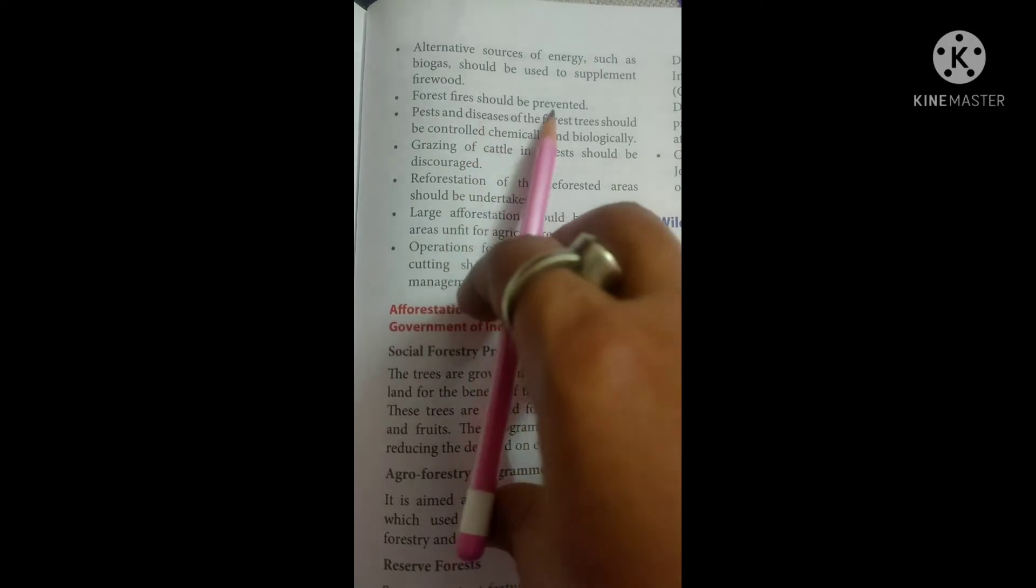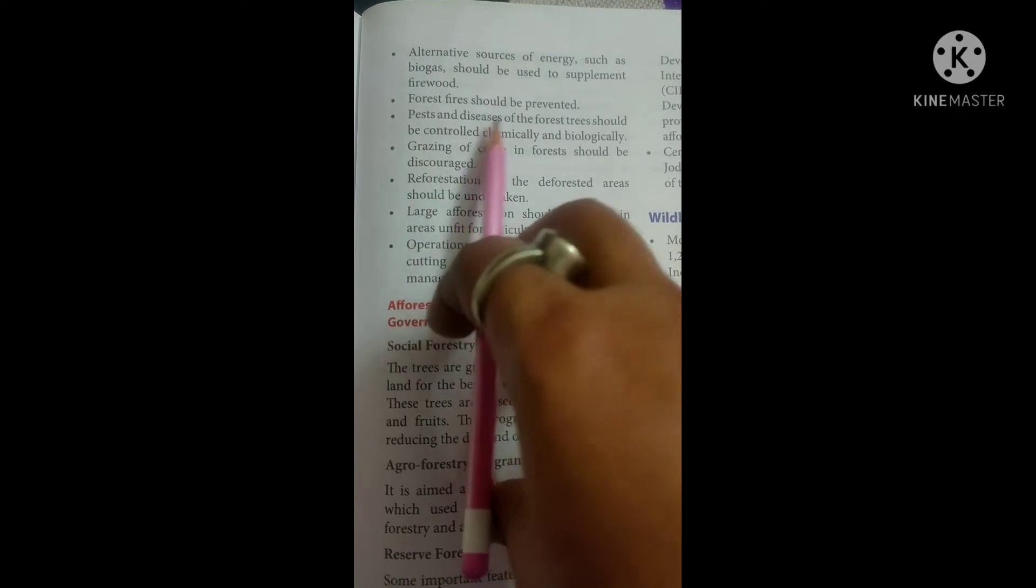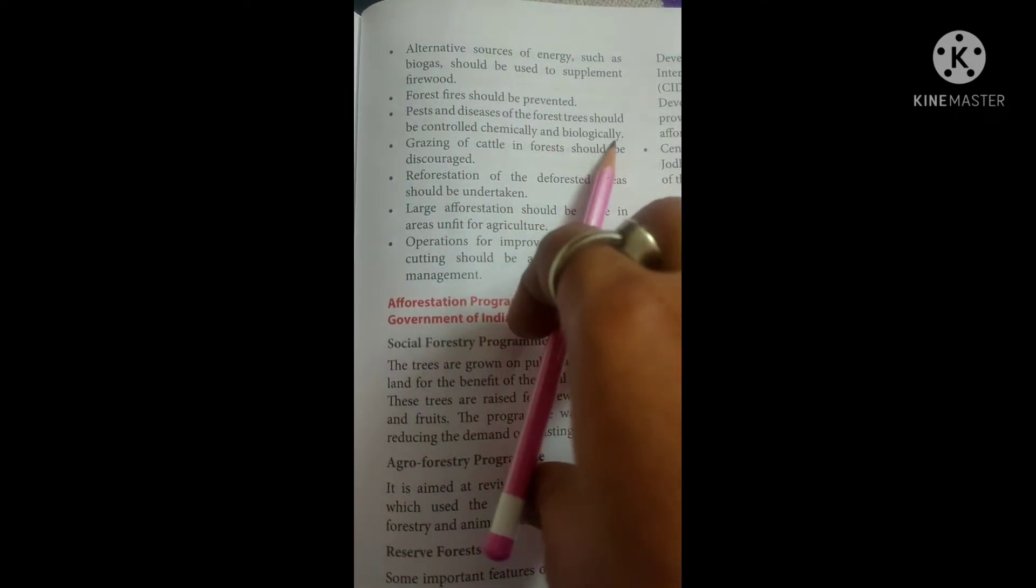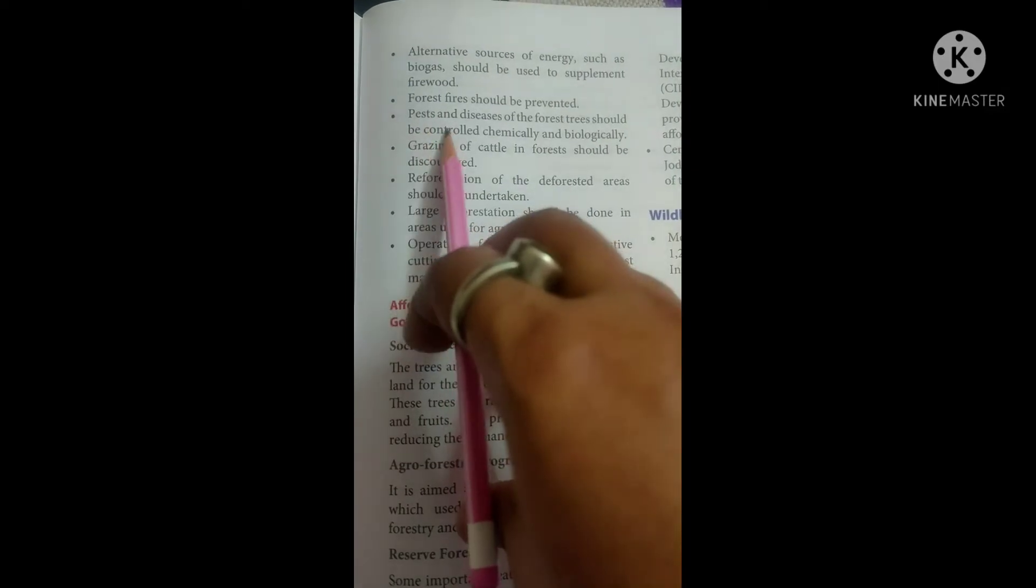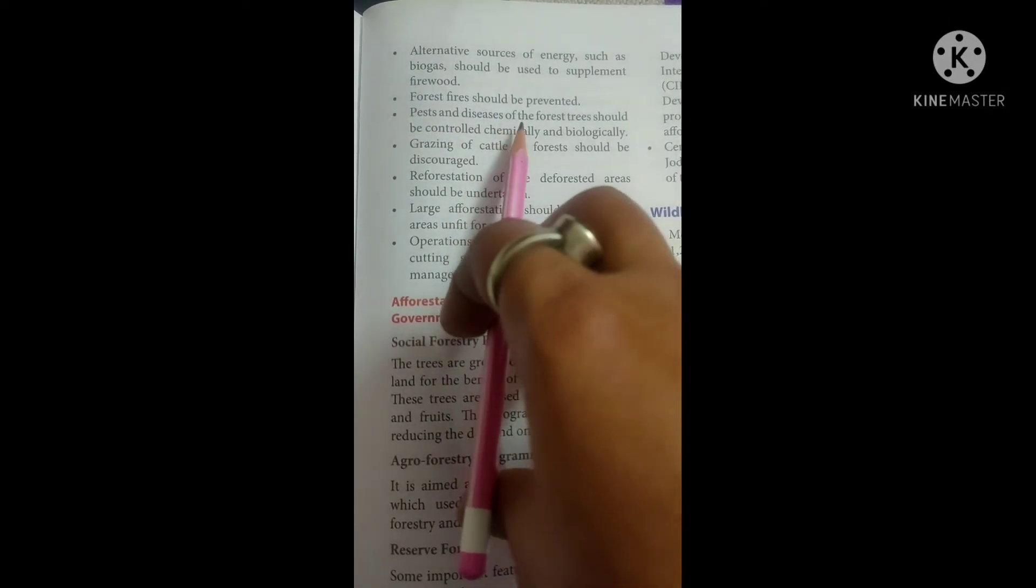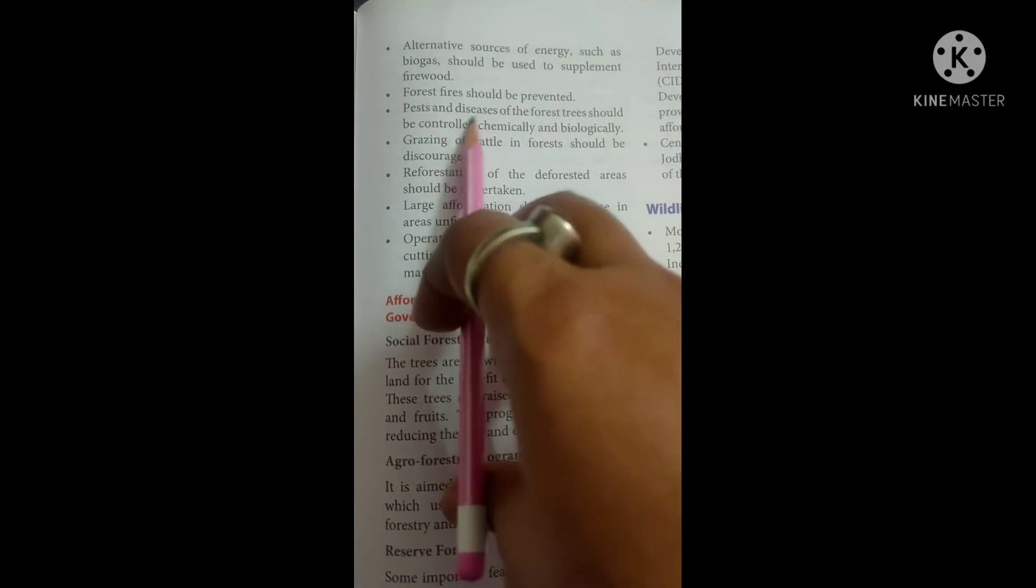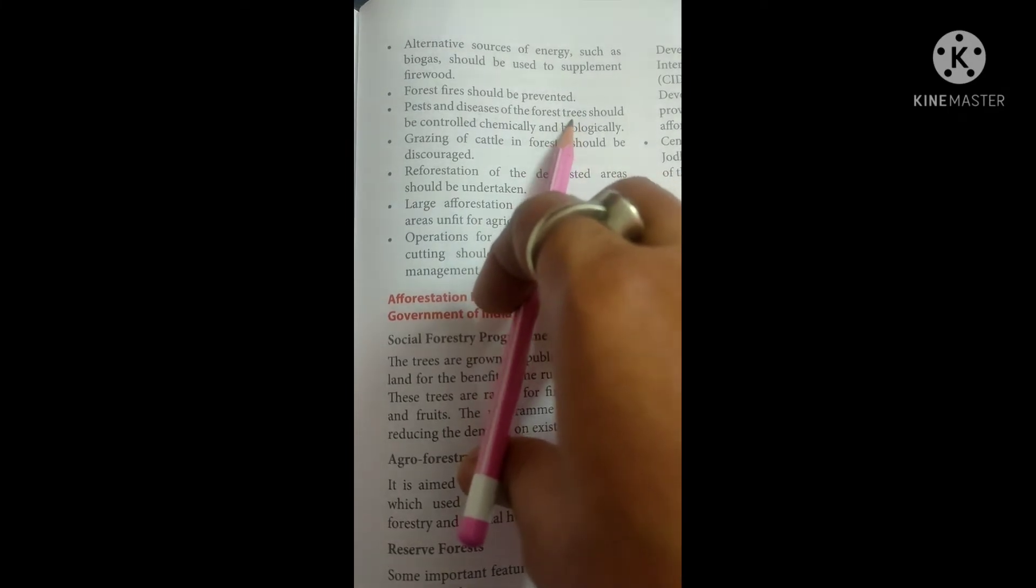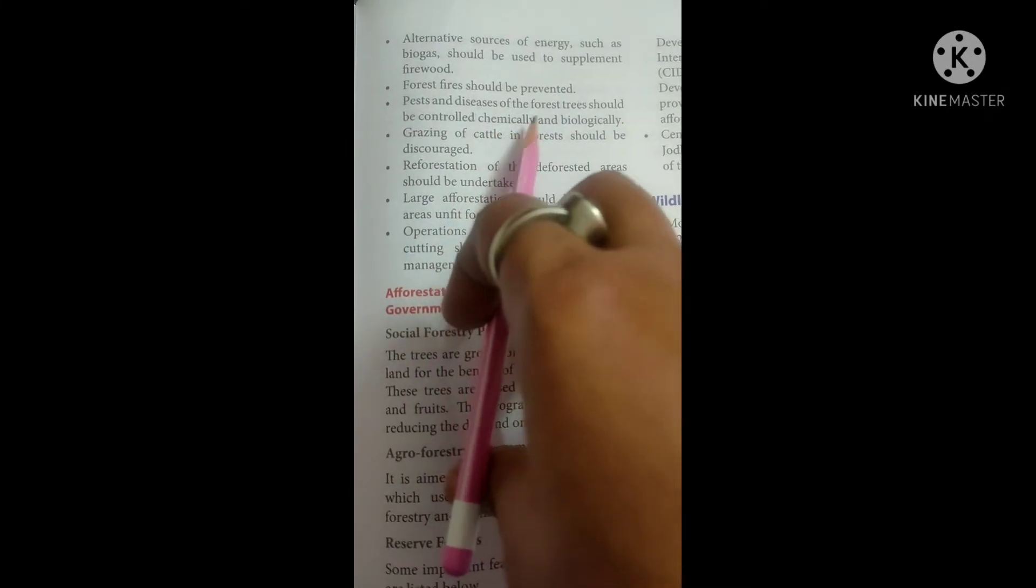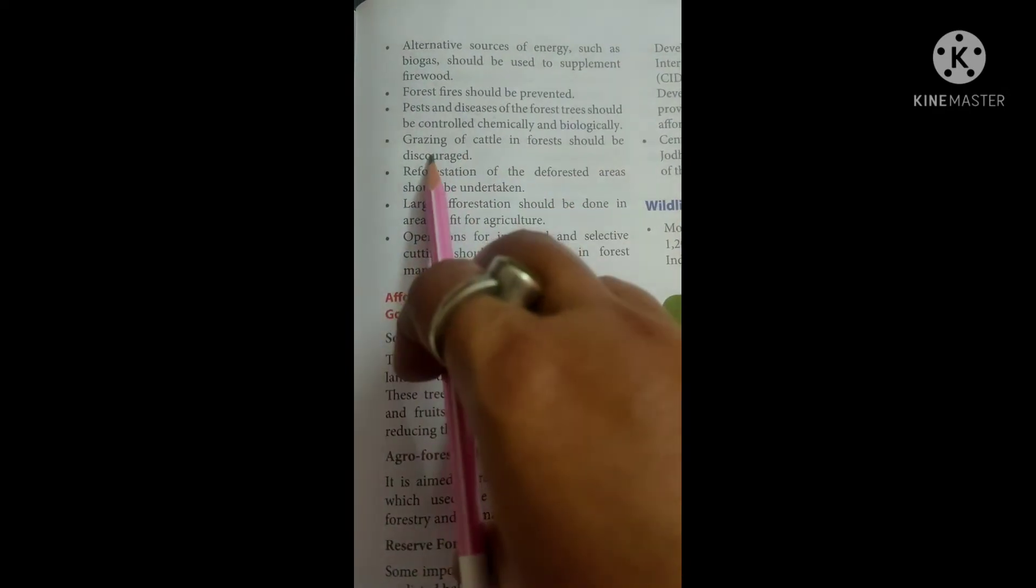Forest fires should be prevented. Pests and diseases of the forest trees should be controlled chemically and biologically. Grazing of cattle in forests should be discouraged.